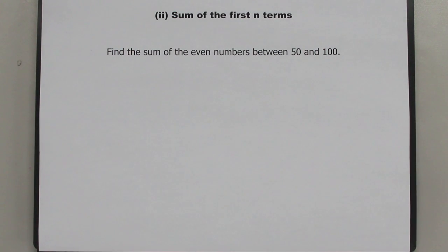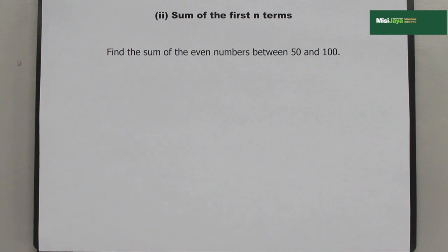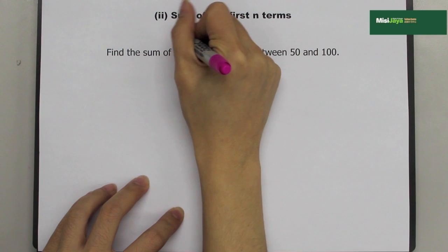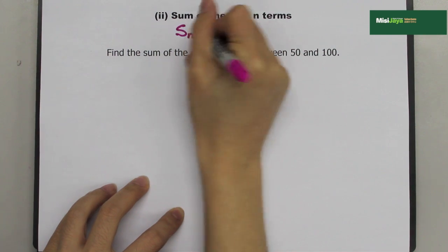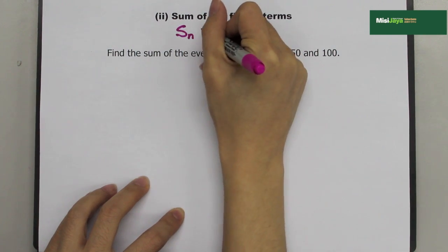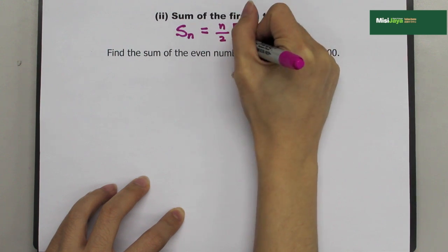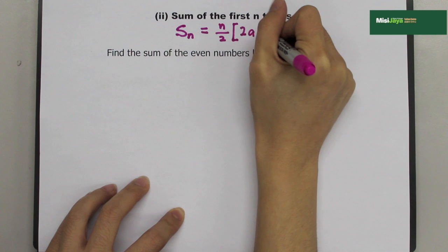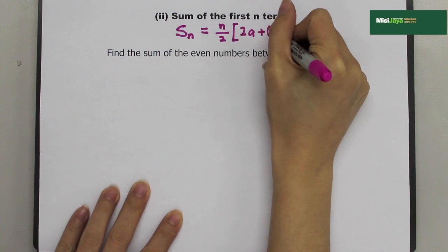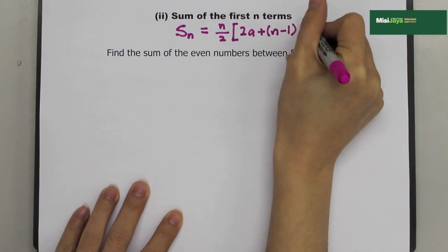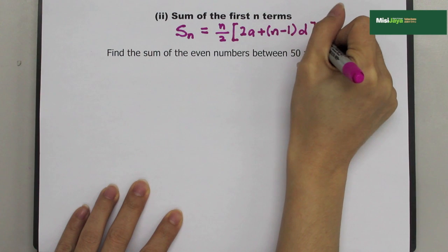The second formula that we have to remember for AP is the sum of the first N terms. The formula is SN equals N over 2, bracket 2A plus N minus 1 times D, close bracket.